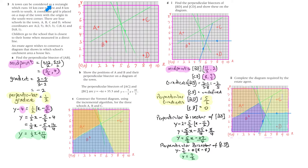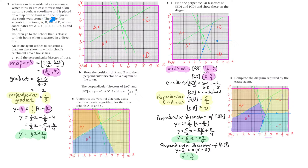Question 3. A town can be considered as a rectangle which runs 10 kilometres east to west and 8 kilometres north to south. So I've got this east to west 10 and 8 north to south, so it's within this purple rectangle. A coordinate grid is placed on a map of the town with the origin in the south-west corner, that's down here.